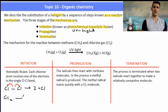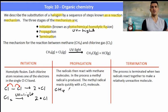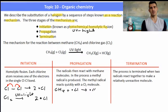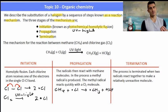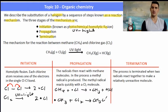We can write this as: Cl₂ → (UV light) 2Cl• — that is the initiation step. Radicals are very reactive, so they quickly react with methane molecules, forming a methyl radical and HCl. The methyl radical then reacts with a chlorine molecule, substituting one chlorine onto the chain to form CH₃Cl, and in the process a new chlorine radical is generated.